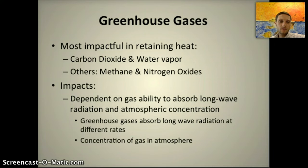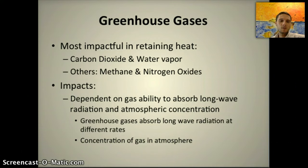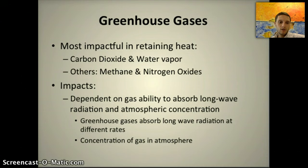Greenhouse gases absorb long wave radiation at different rates, and the concentration of a gas in the atmosphere can also influence how much heat is actually retained. Carbon dioxide is released through photosynthesis, combustion, and respiration. Methane is emitted from marshes, waterlogged habitats, and landfills. Nitrous oxide is released by bacteria in agricultural settings and by vehicle exhausts. The concentration of each gas depends on the rate at which it's released and how long it remains in the atmosphere.